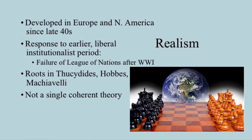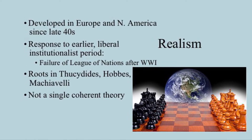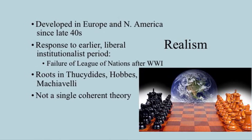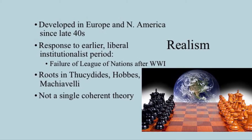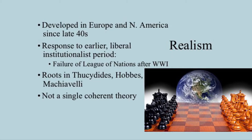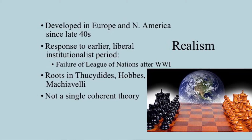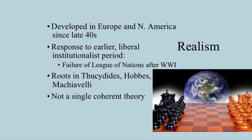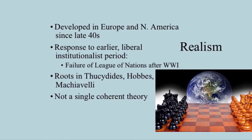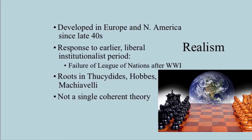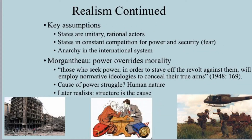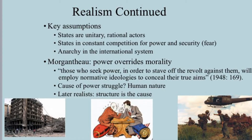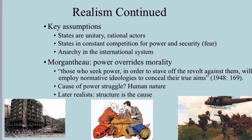Modern realism has its roots in ancient Greek philosophy, but faced a strong revival in the 1940s in response to the perceived failures of liberalism to prevent World War II. The institutionalist period prior had seen the failure of international institutions when Hitler withdrew from the League of Nations in 1933. This institution had been established by the Treaty of Versailles under the guidance of Woodrow Wilson after the end of World War I. Because it is mainly a response to what it sees as failures of liberalism, there is no single coherent realist theory, but instead branches of realist theory based on a few common assumptions: that states are unitary, rational actors in constant competition for power and security, which leads to a fearfulness of every actor, and there is anarchy in the international system.